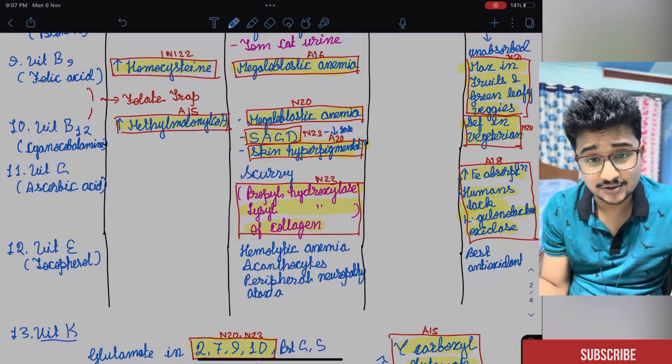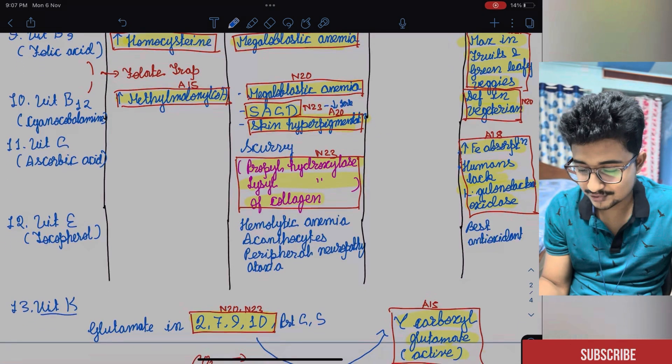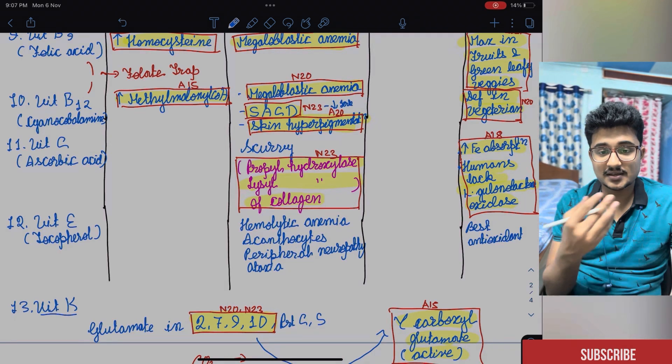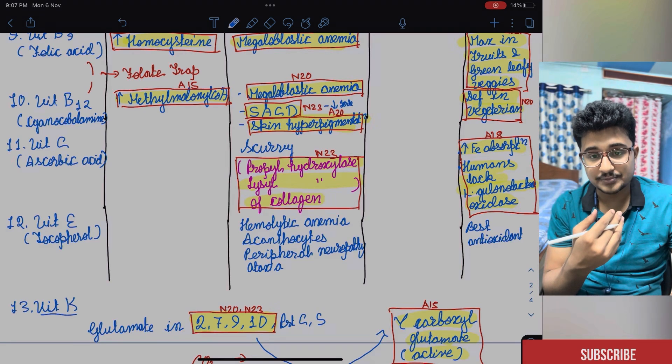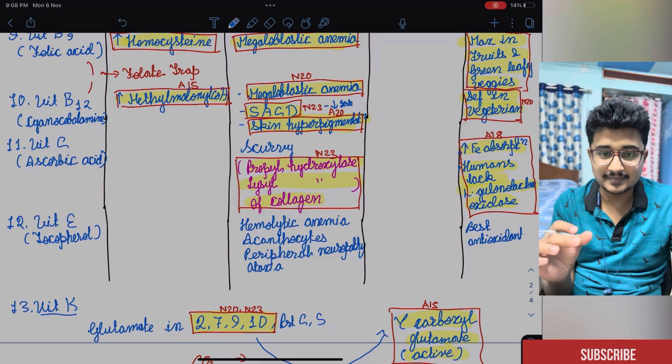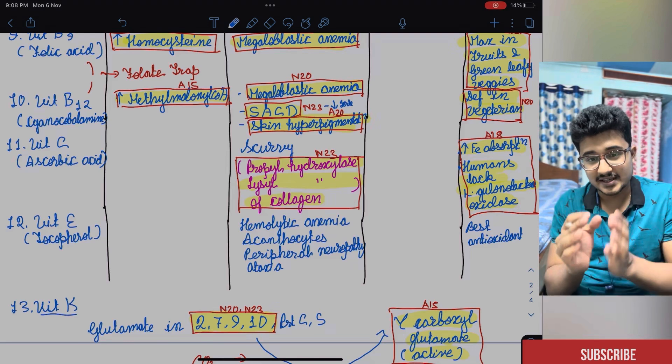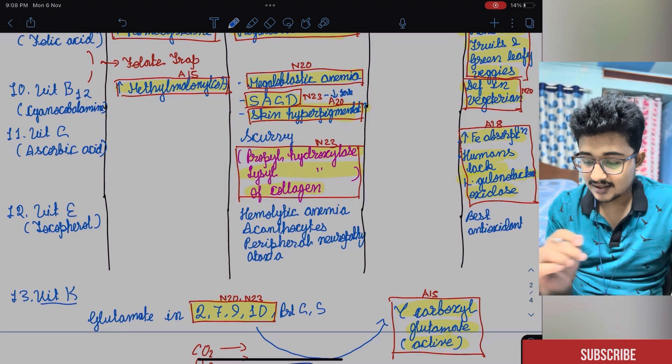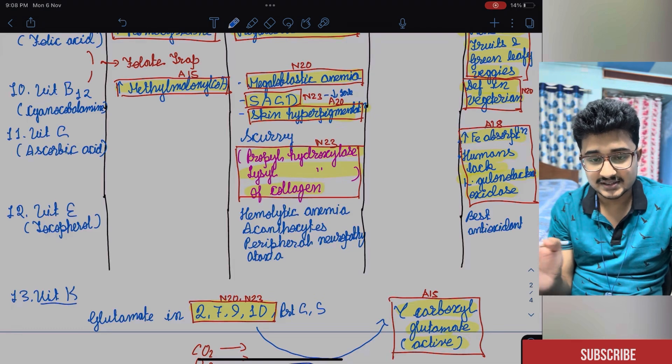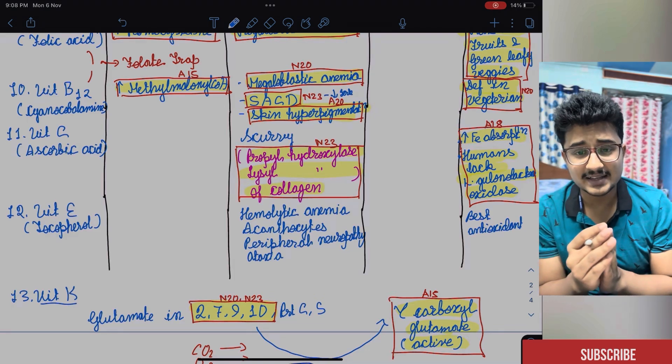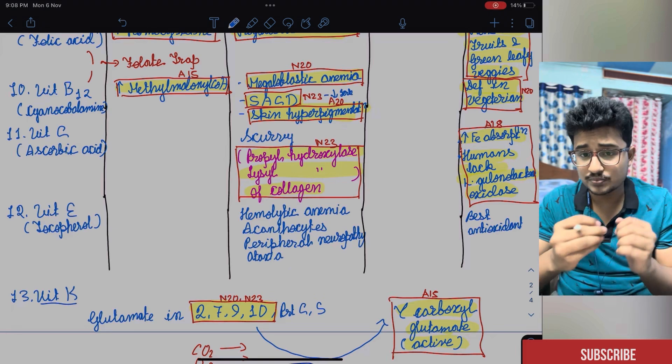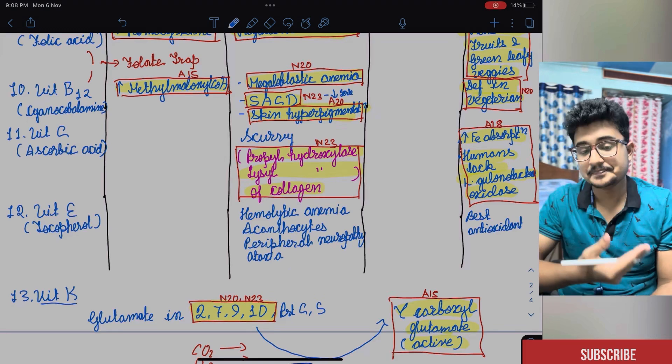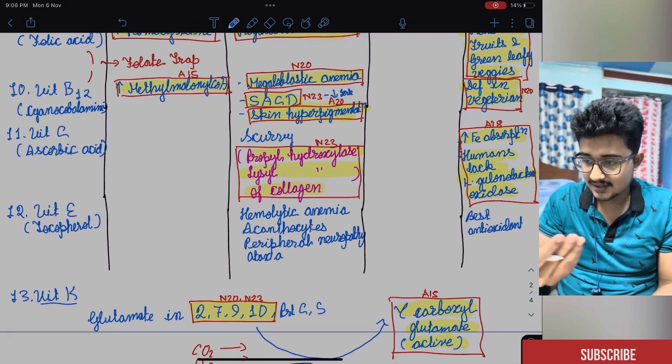Vitamin C, one point most of you may forget that it increases the Fe absorption because Fe absorption occurs in Fe 2+ by the divalent metal transporter. It helps in keeping it in the reduced state being an acid. And humans lack the L-gulonolactone oxidase because it is present in the ruminant animals. It is absent in humans. So humans cannot synthesize vitamin C. So it is important for us to intake the vitamin C.